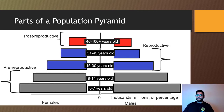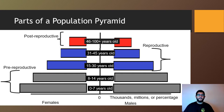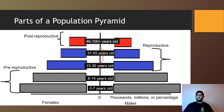Looking at the diagram, there are some commonalities. They're typically color-coded and divided into groups — for example, 0 to 7 and 8 to 14. The left side tends to be females and the right side males. The x-axis shows either thousands, millions, or a percentage of the population. The groups are labeled pre-reproductive, reproductive, and post-reproductive, with the middle groups being the main baby-having ages, and 46 and beyond being post-reproductive.